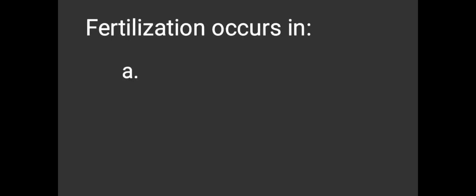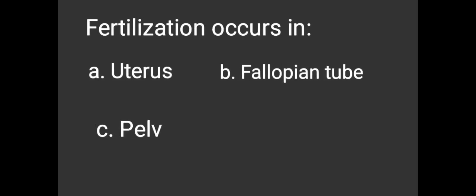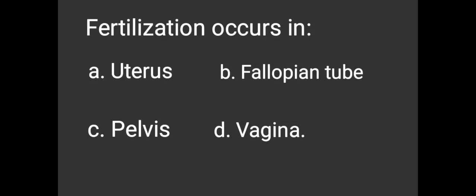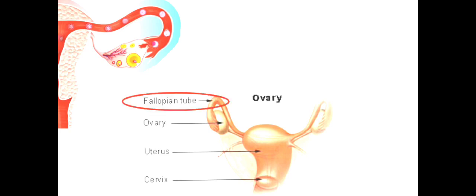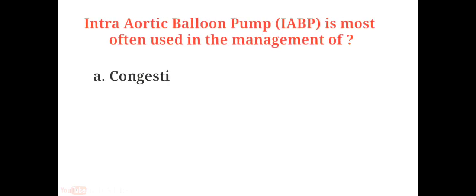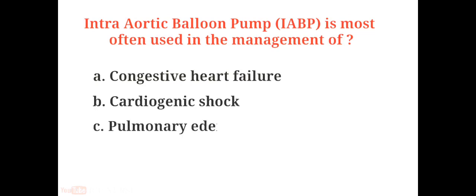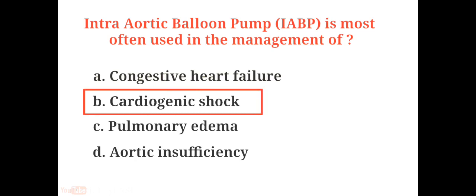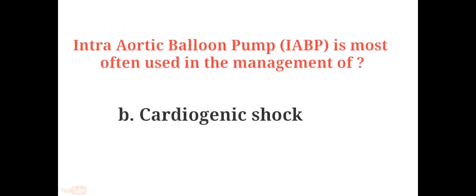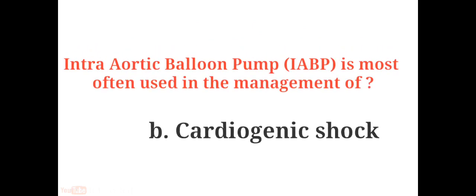Fertilization occurs in: A. Uterus, B. Fallopian tube, C. Pelvis, D. Vagina. The answer is B. Fallopian tube. Intra-aortic balloon pump (IABP) is most often used in the management of: A. Congestive heart failure, B. Cardiogenic shock, C. Pulmonary edema, D. Aortic insufficiency. The answer is B. Cardiogenic shock. Cardiogenic shock occurs if the heart suddenly cannot pump enough oxygen-rich blood to the body.